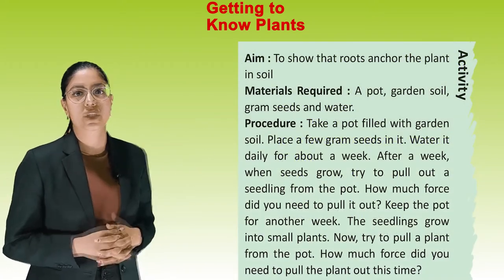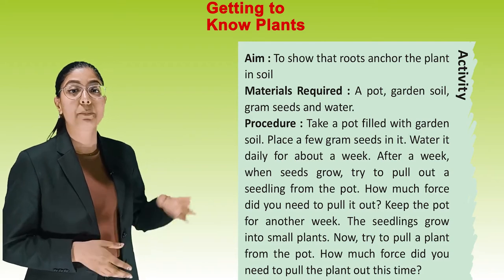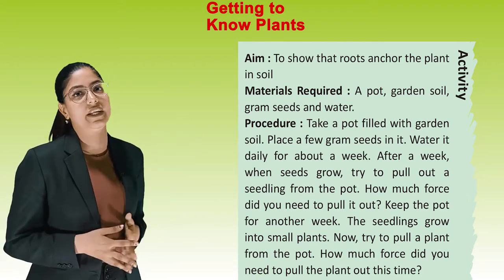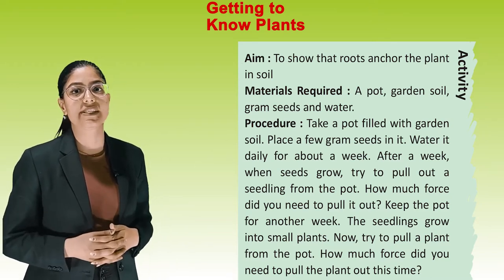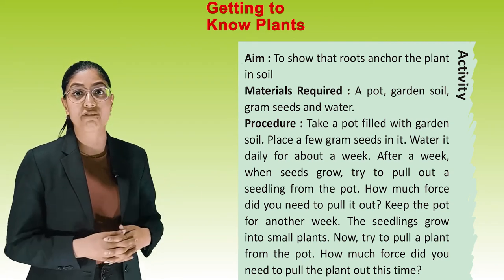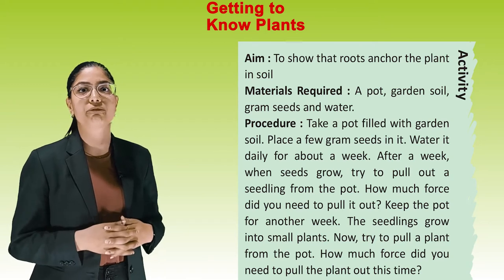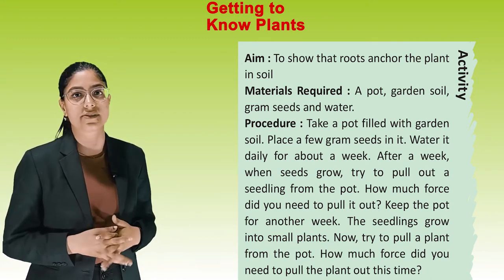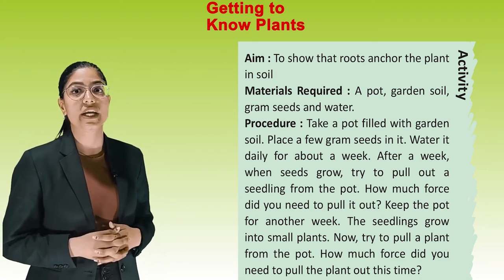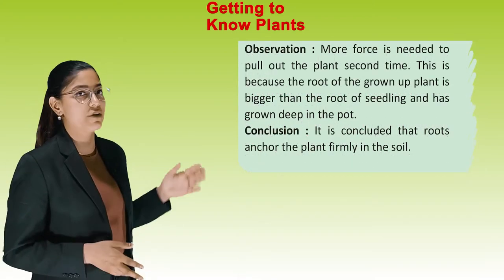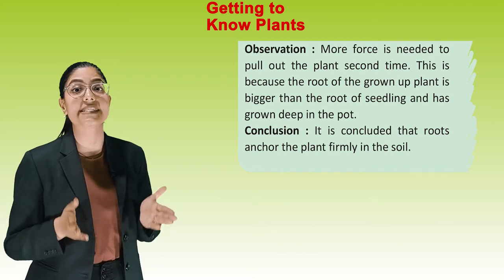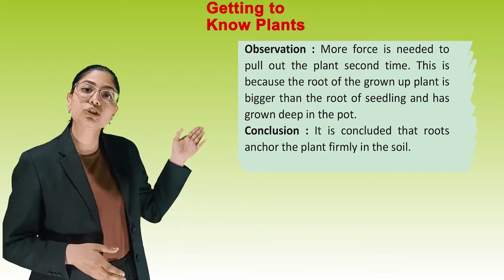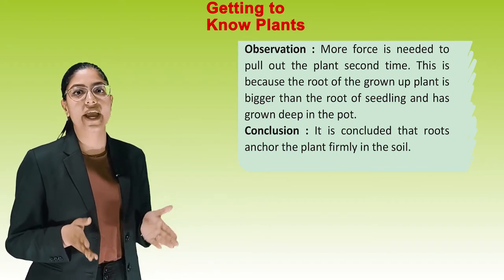Activity 1 — Aim: To show that roots anchor the plant in soil. Materials: A pot, garden soil, gram seeds and water. Procedure: Fill a pot with garden soil, place a few gram seeds in it, and water it daily for about a week. When seeds grow, try to pull out the seedlings. After another week, try to pull a grown plant out. More force is needed to pull out the plant the second time, because the roots have grown bigger and deeper. Conclusion: Roots anchor the plants firmly in the soil.